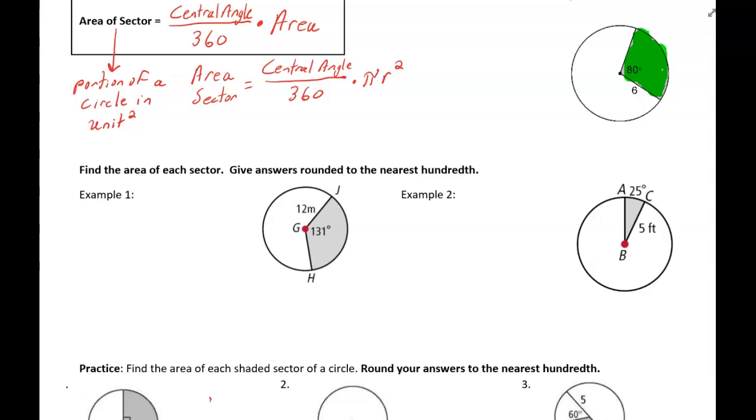So let's take a look at the example to the right. So the area of that sector, I'll say AS for abbreviation for area of a sector, is going to be equal to 80 over 360 times pi times the radius. And the radius in this example is 6 squared.